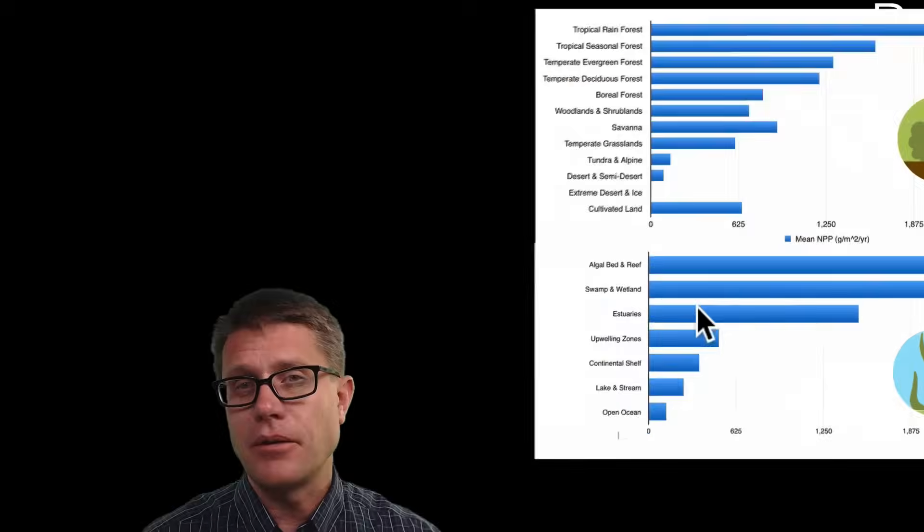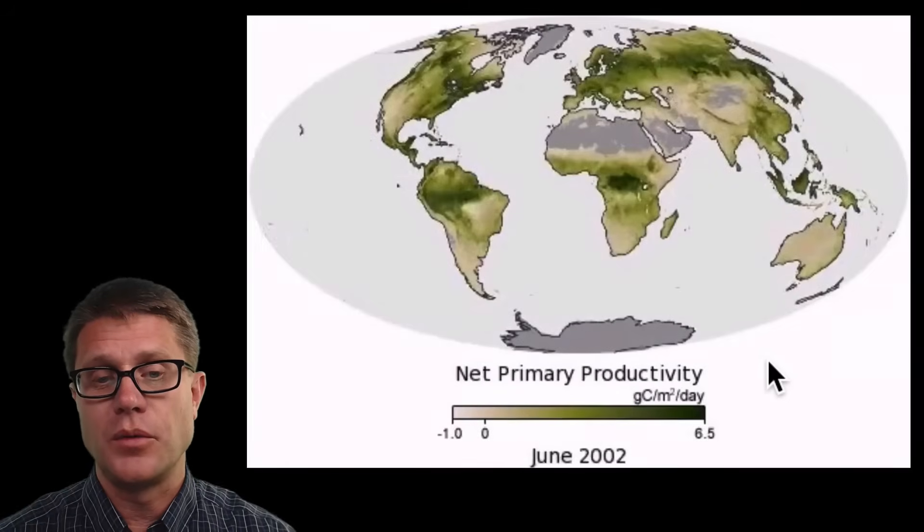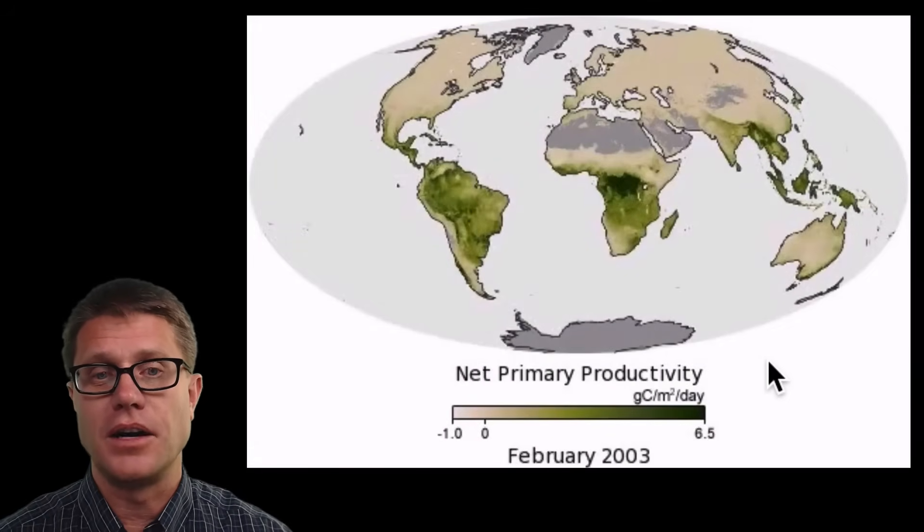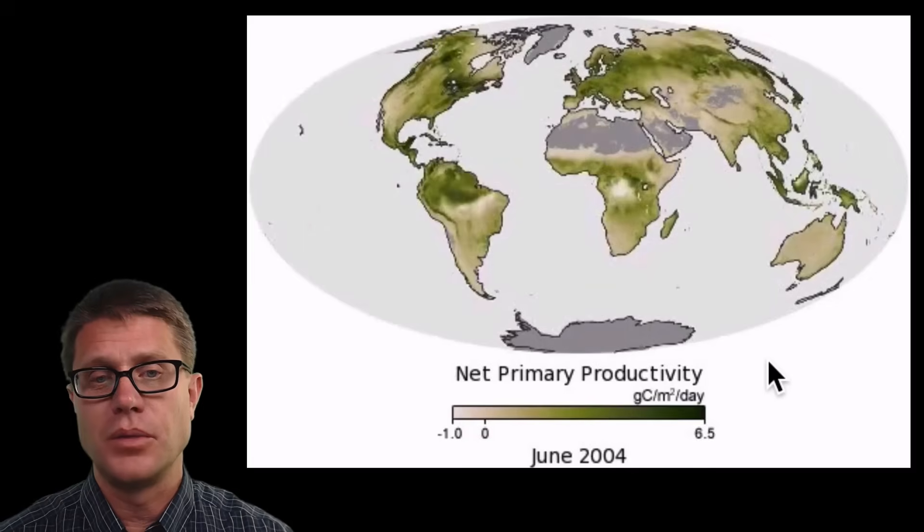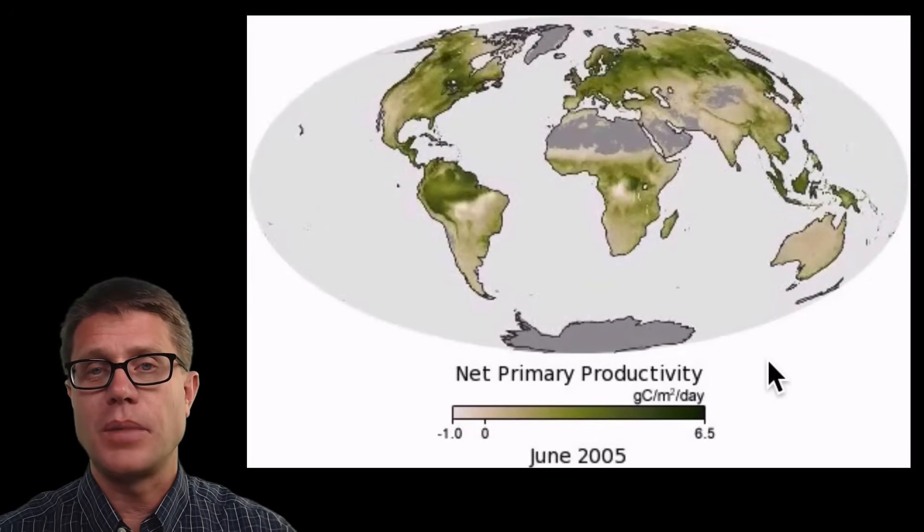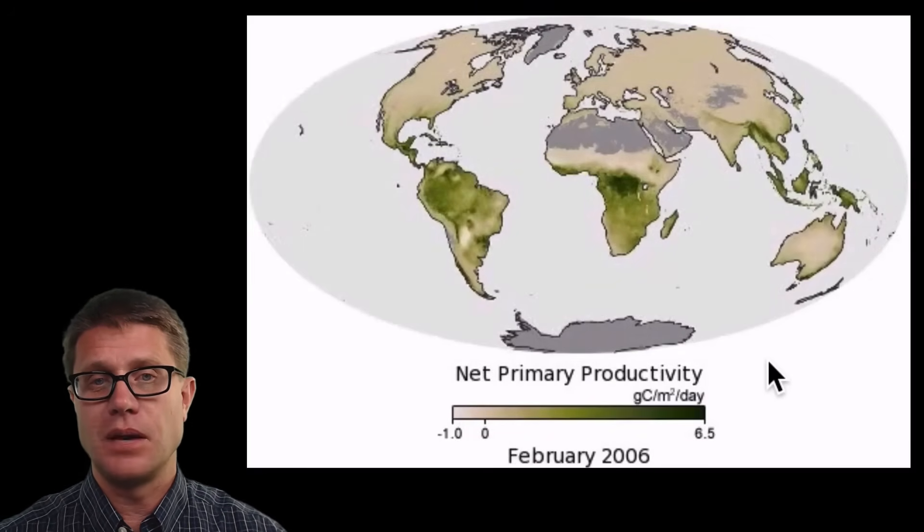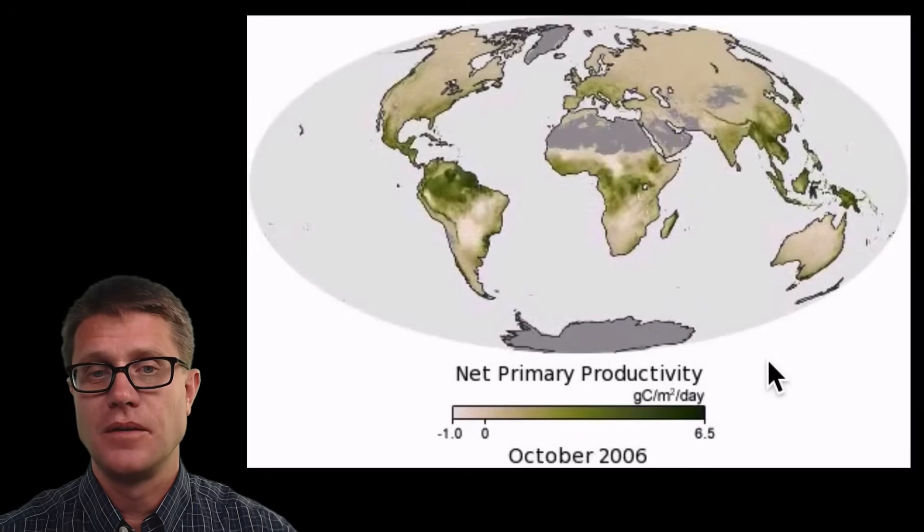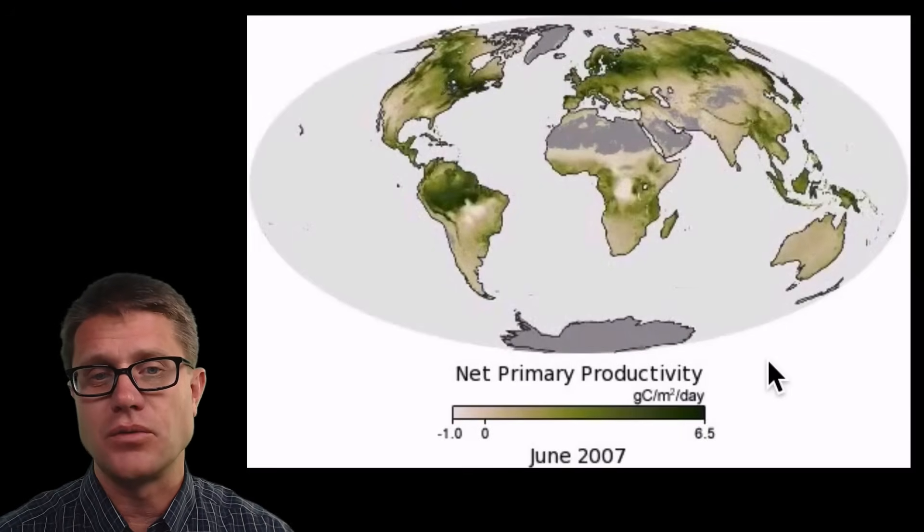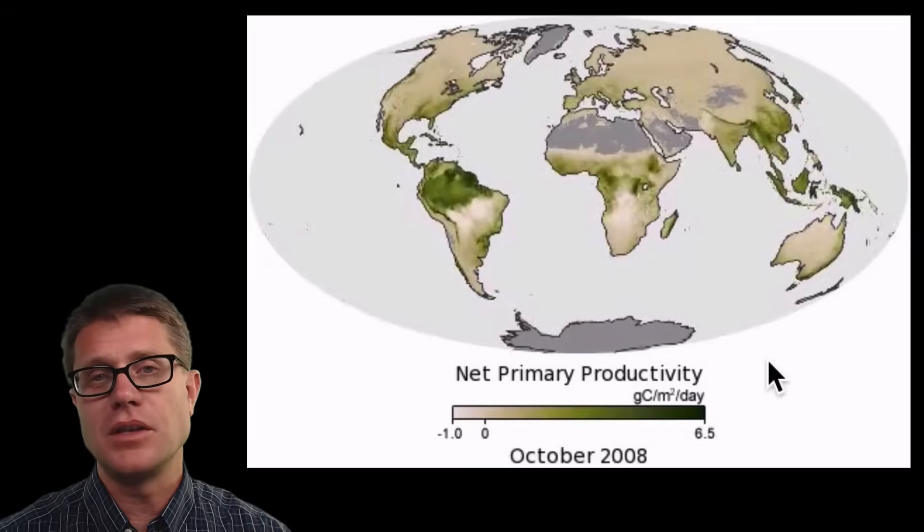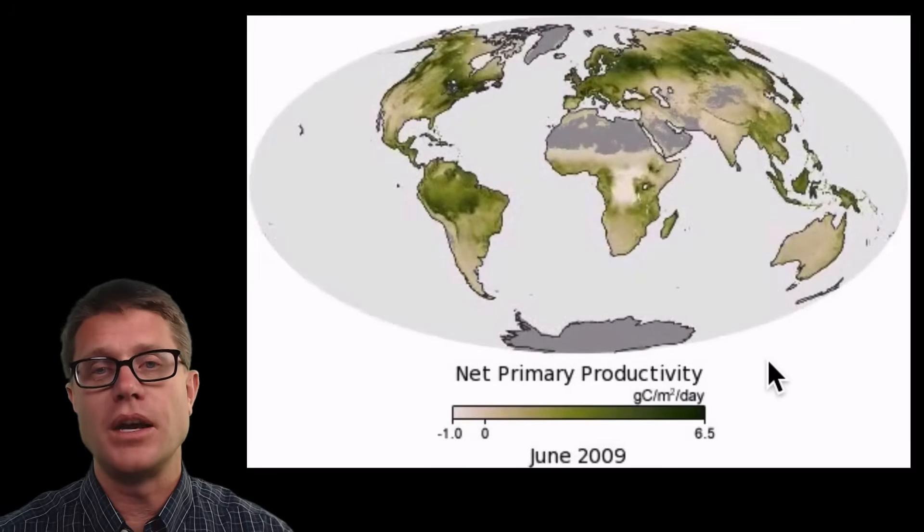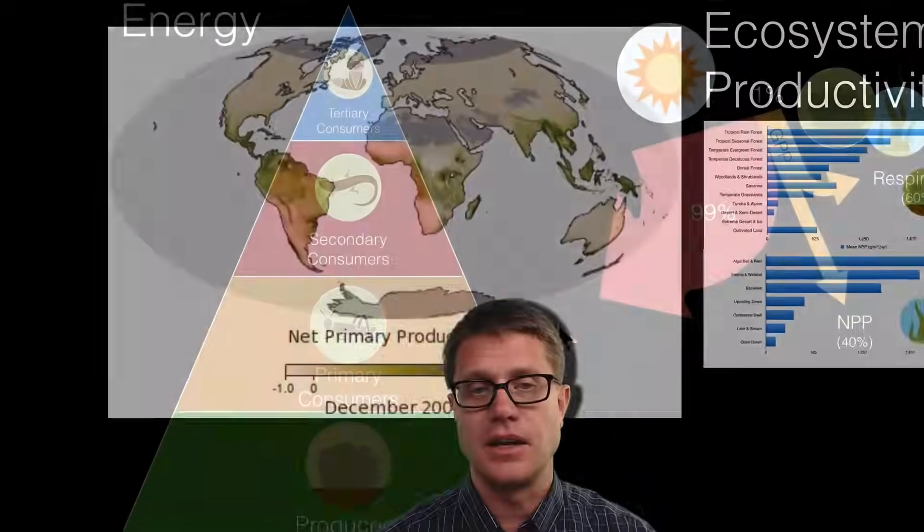We could even look at how it changes over time. So this is net primary productivity. So this is terrestrial on land. And watch what happens as it changes over an 11 year period of time. You can see it is just moving back and forth. It is moving from the southern hemisphere to the northern hemisphere. You can see there is no production in areas where we have massive deserts. But what is causing that change is simply going to be the seasons. During the summer we are going to have way more production where there is way more sunlight.